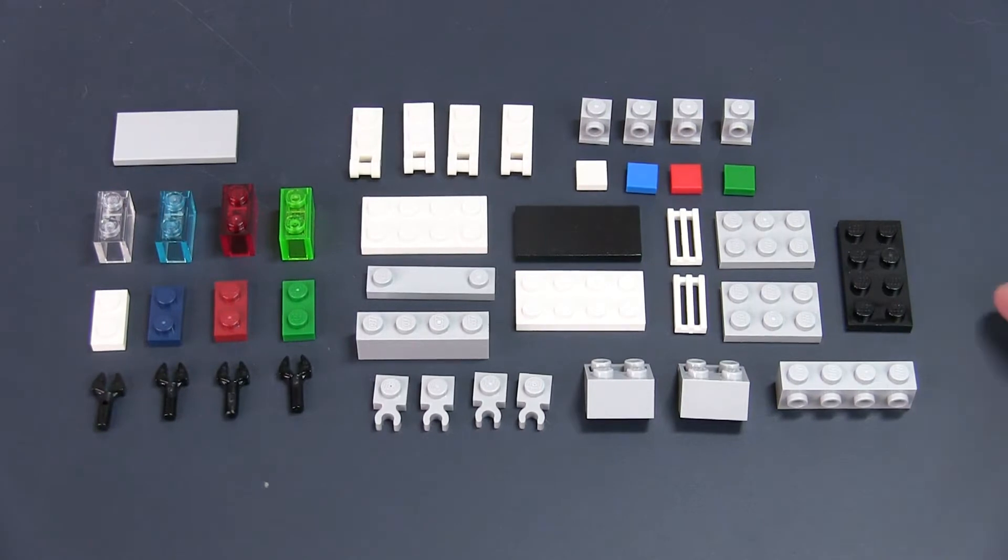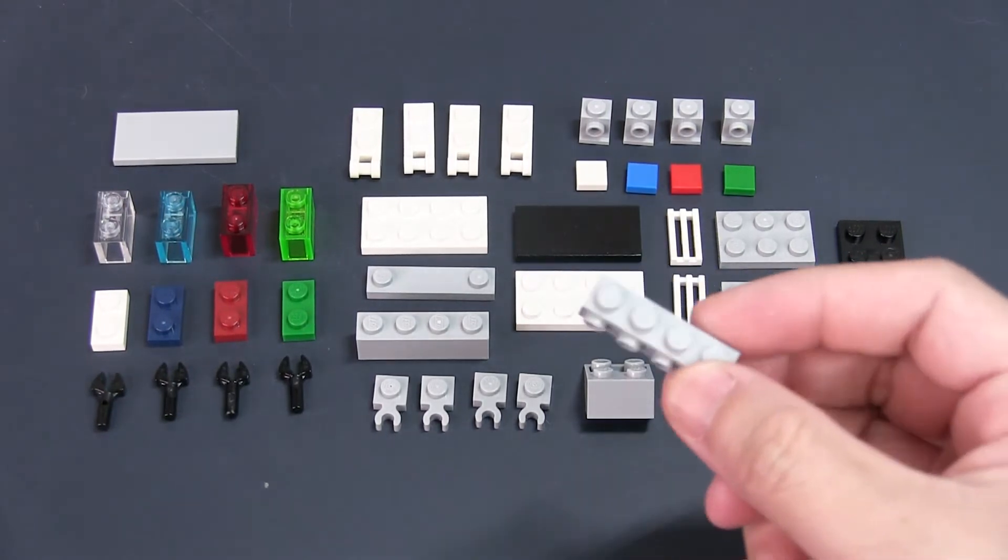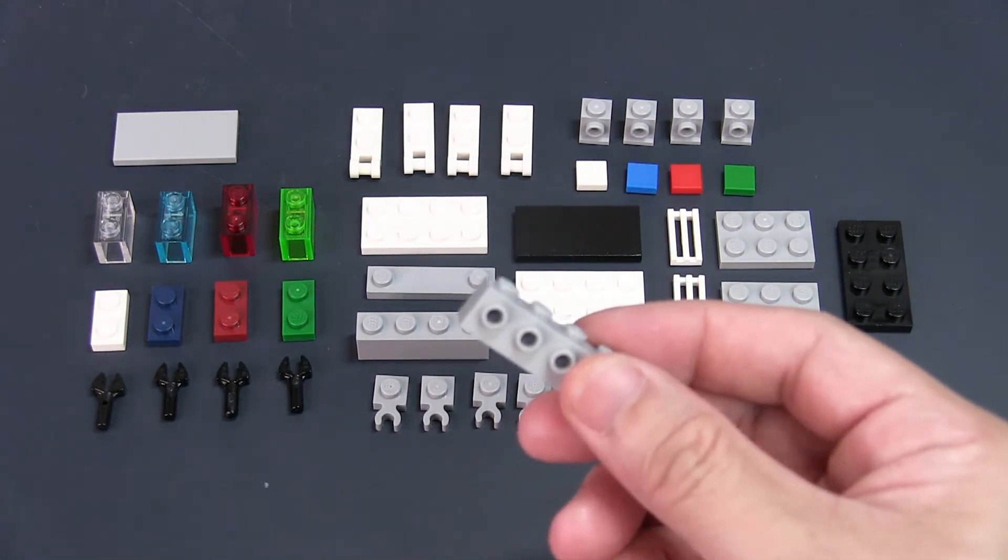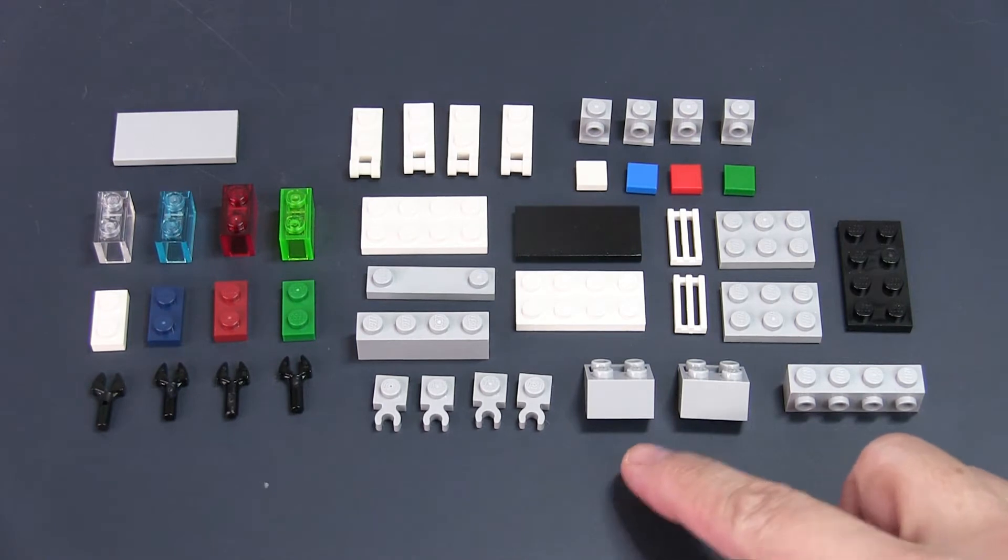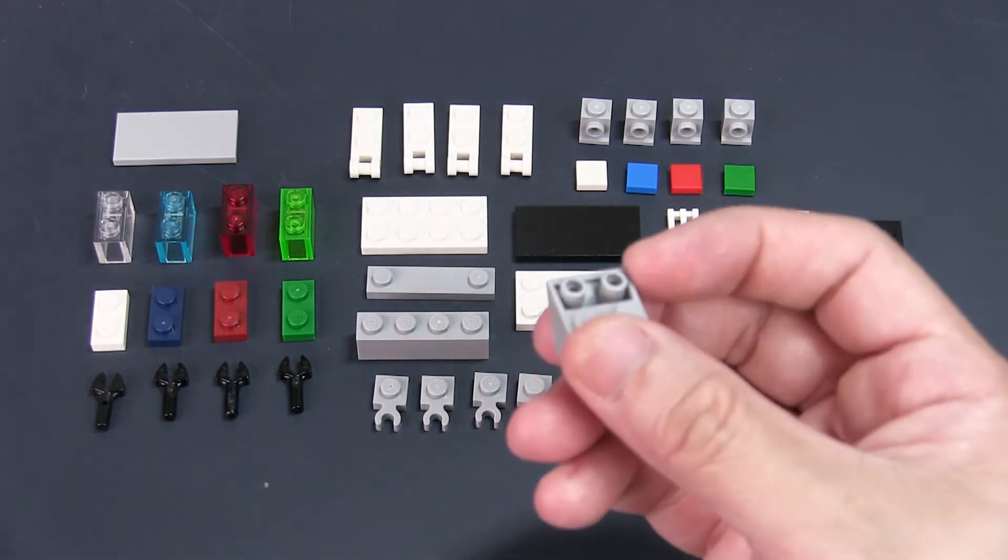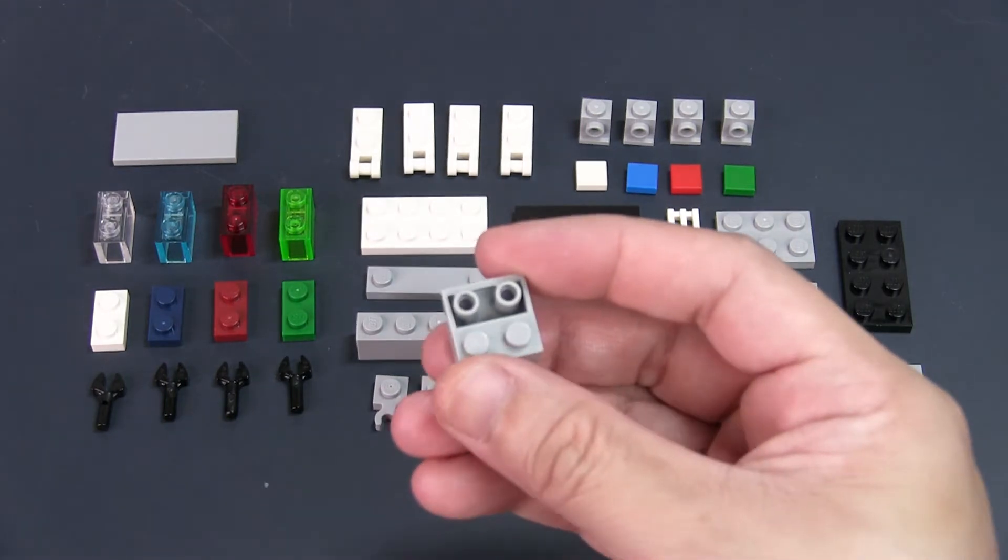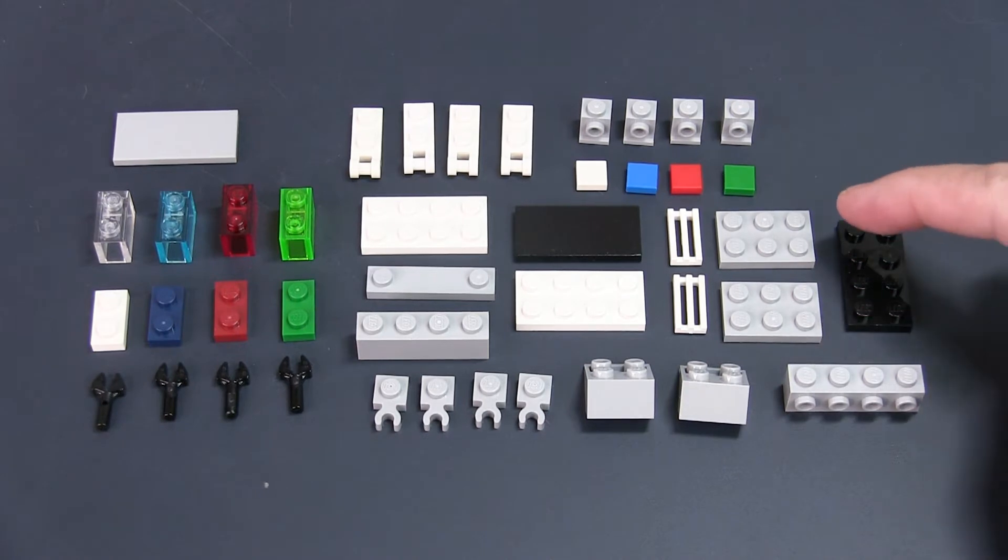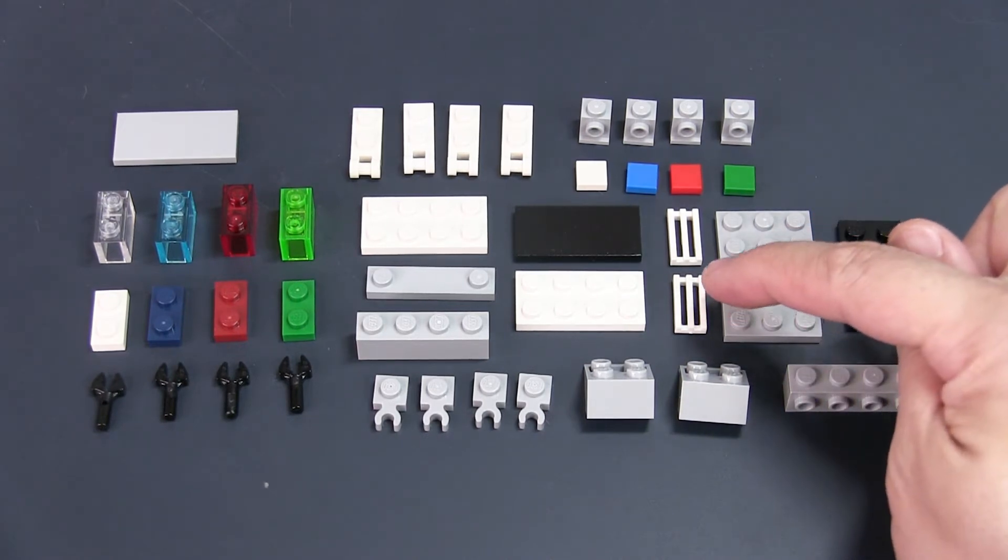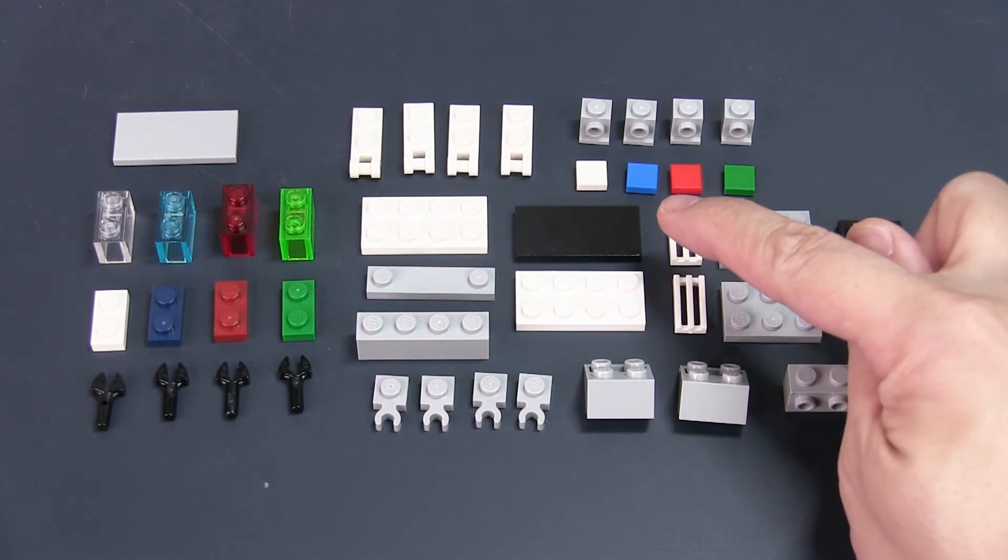Here are the parts you need. A 2x4 black plate, one 1x4 brick with studs in the front. You can also use two 1x2 bricks with studs on the front instead. Two 2x2 reverse slope bricks. Note these are reverse slopes because the studs are on top and not below. You also need two 2x3 plates, two 1x2 grill pieces, one 2x4 white plate and one 2x4 black tile.